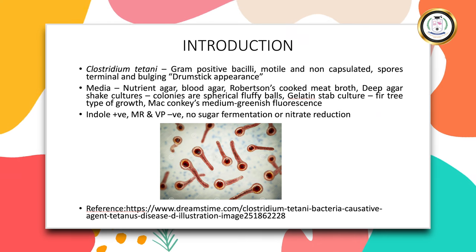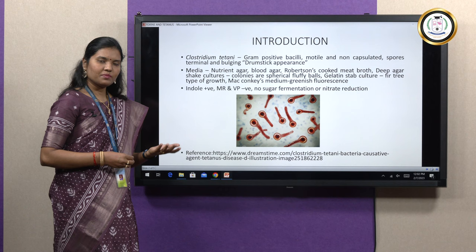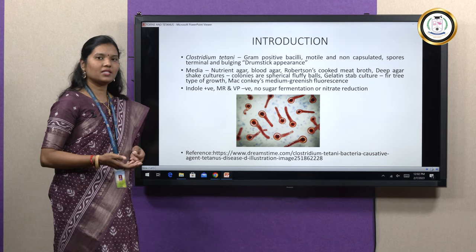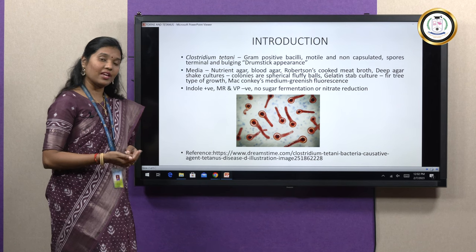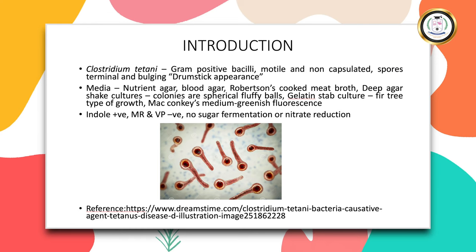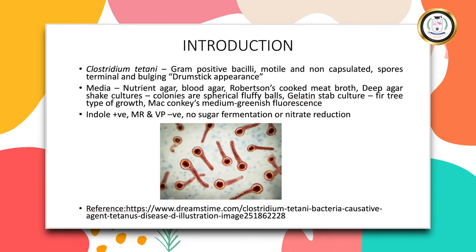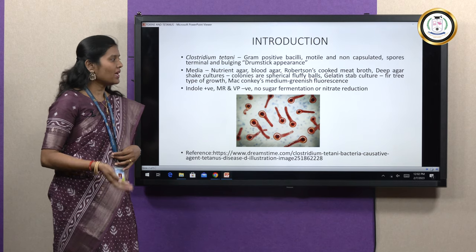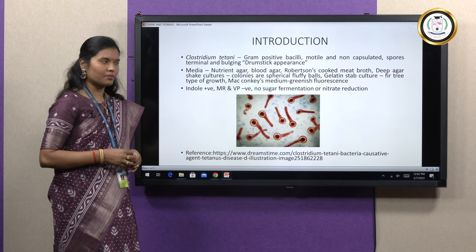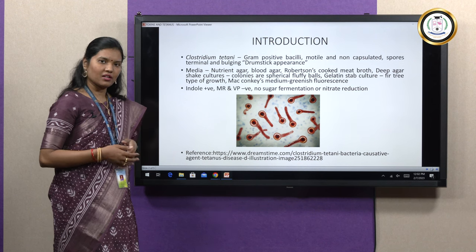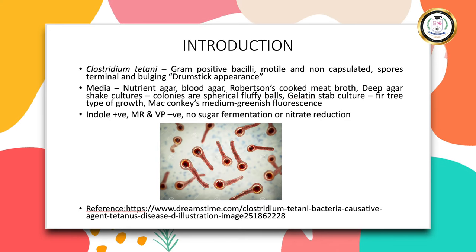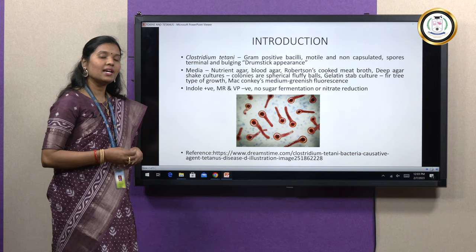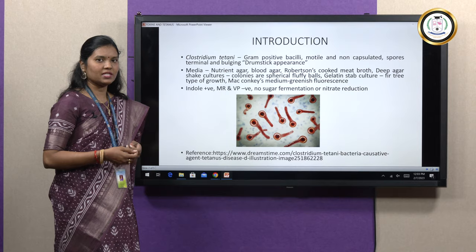The spores are also bulging. Coming to the media, organisms can grow well on ordinary media itself, but if the media is enriched with blood serum or egg, it would support more efficient growth of the organisms. On blood agar, alpha hemolysis starts to be seen which continues to beta hemolysis also. Other media include Robertson's cooked meat broth. In deep agar shake cultures, the colonies appear to be spherical fluffy balls. In gelatin stab cultures, a characteristic fir tree shaped appearance is seen.